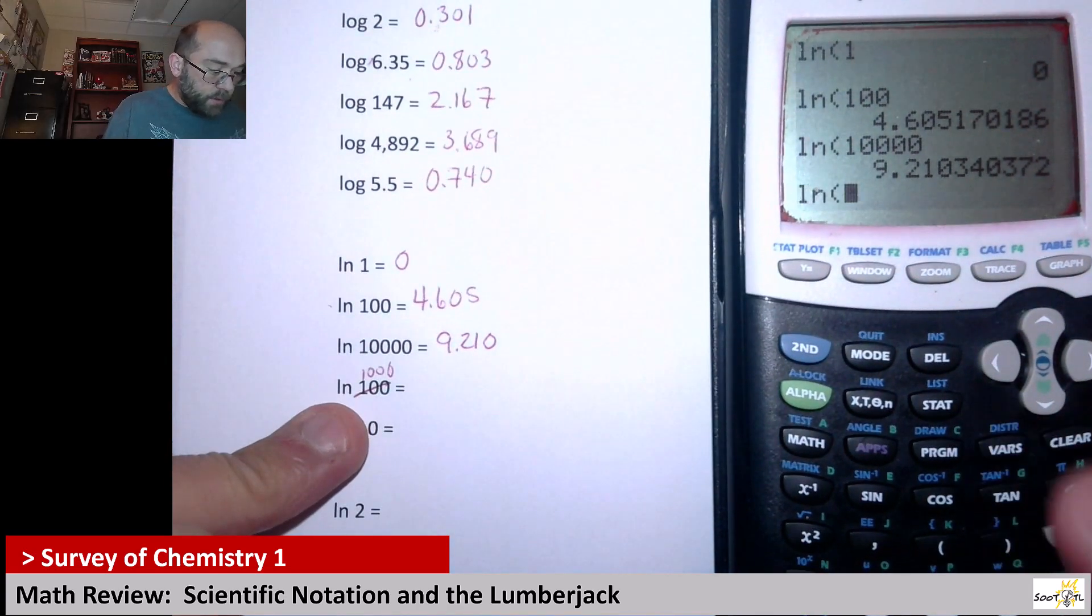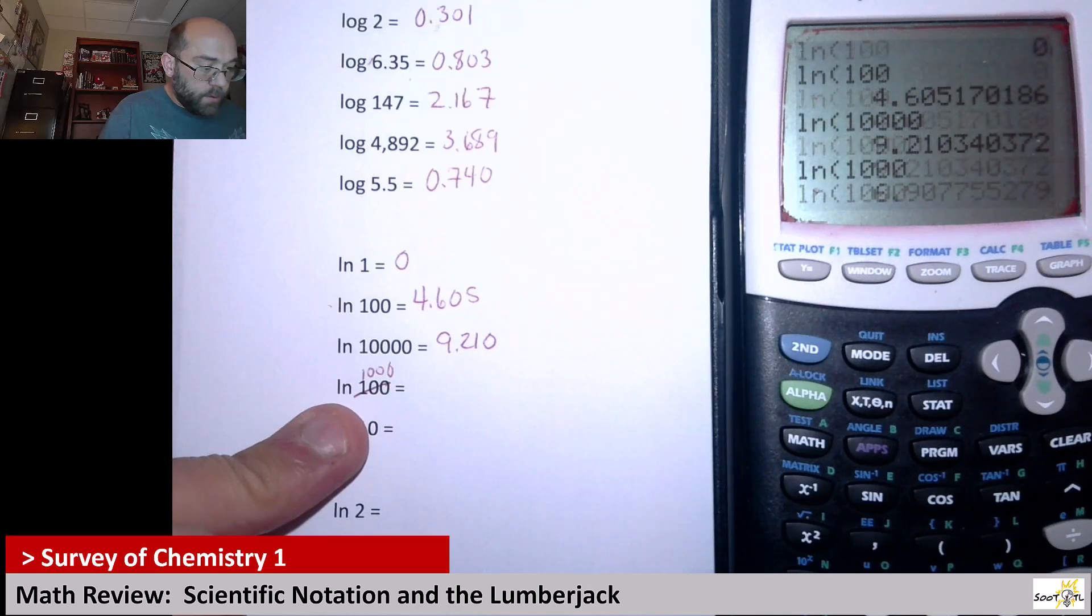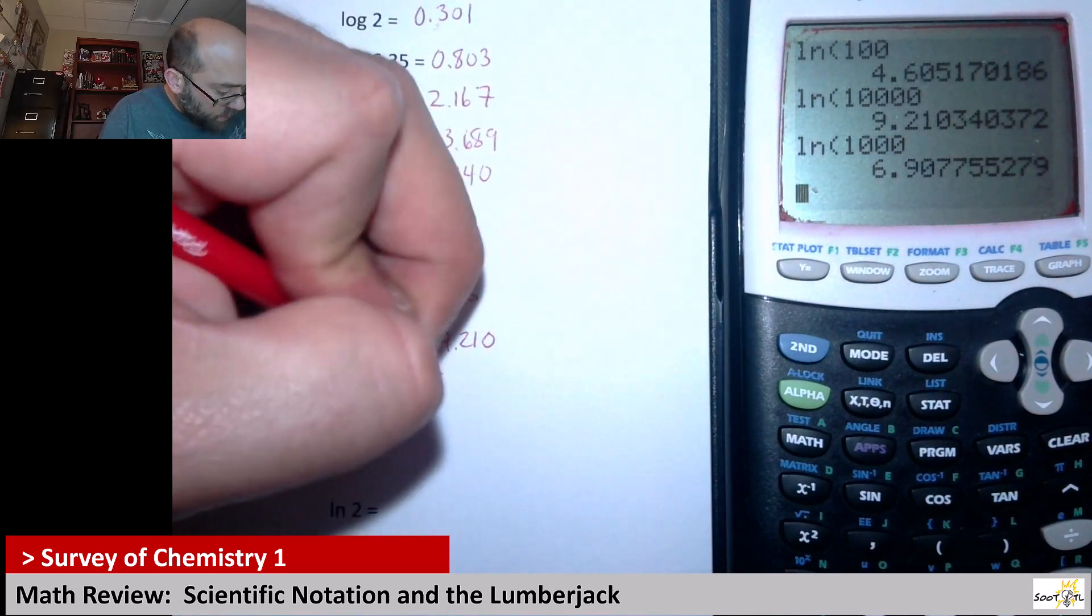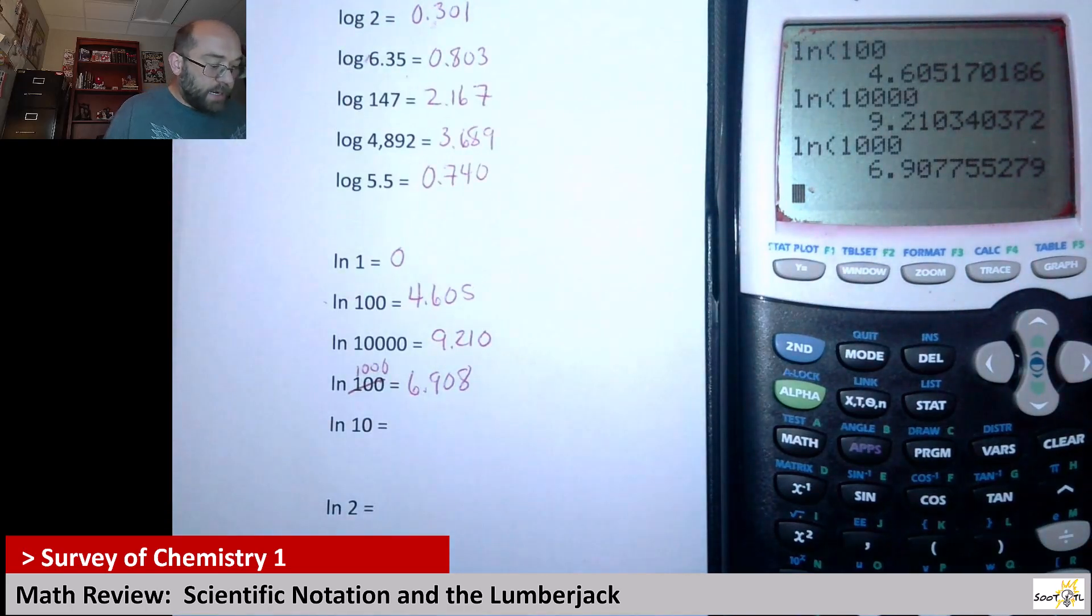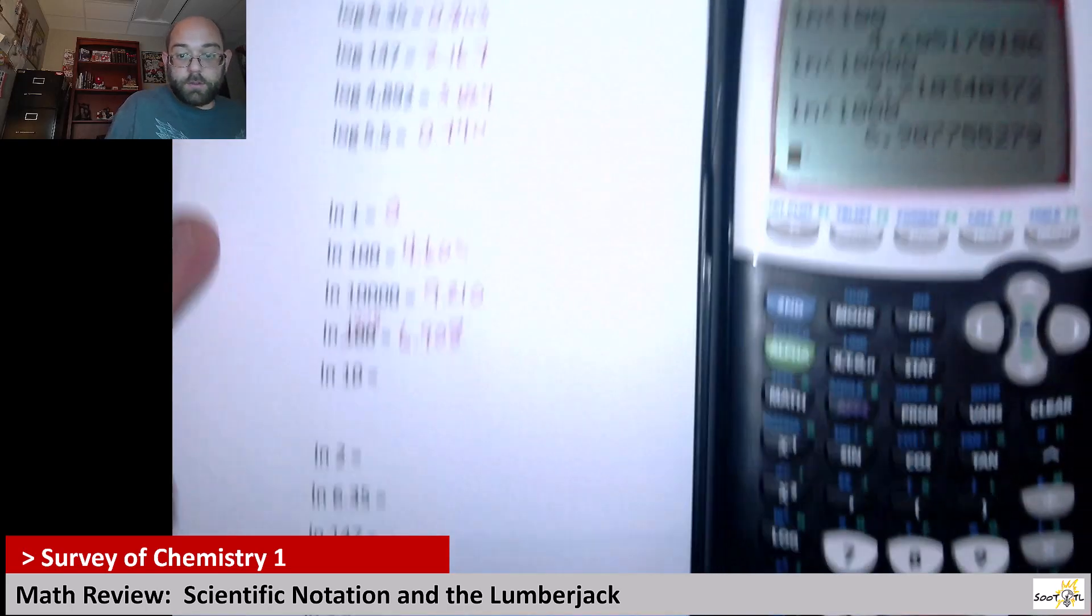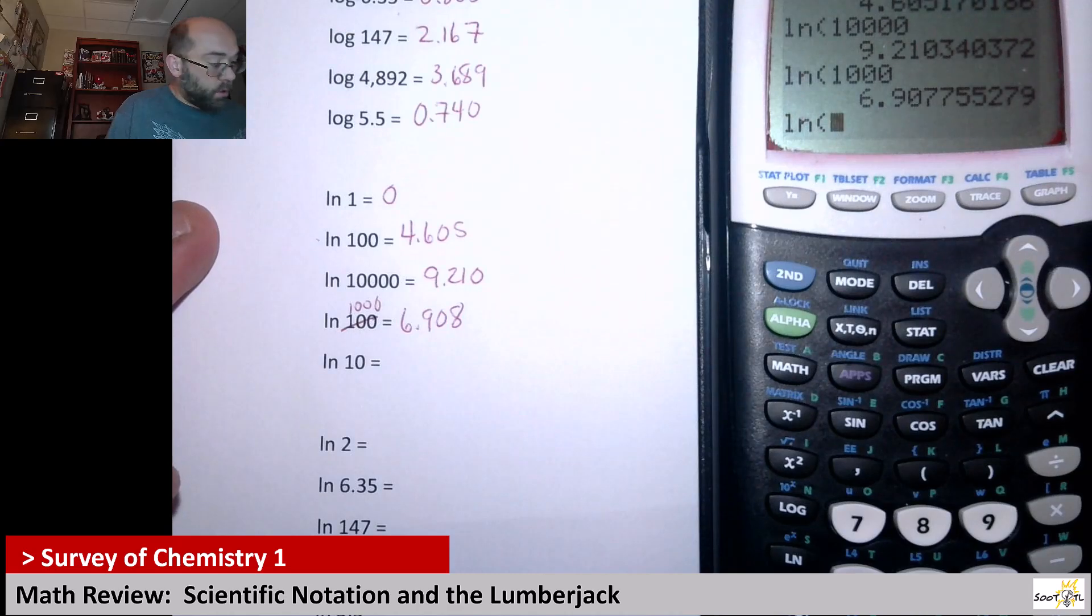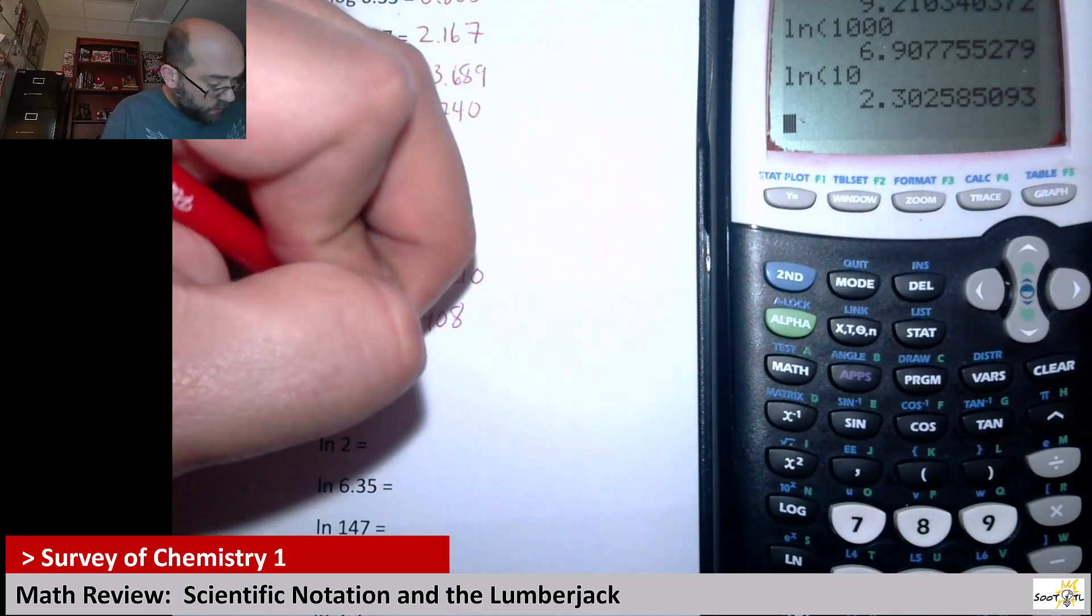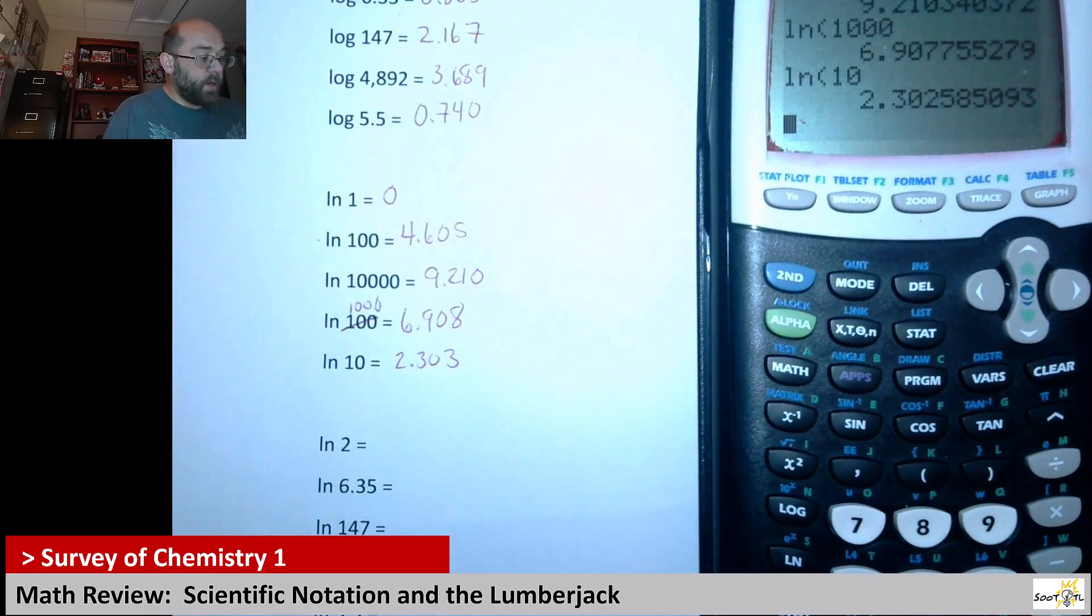Natural log of 1,000. What do I get? I get 6.908. And then, natural log of 10. 2.303.